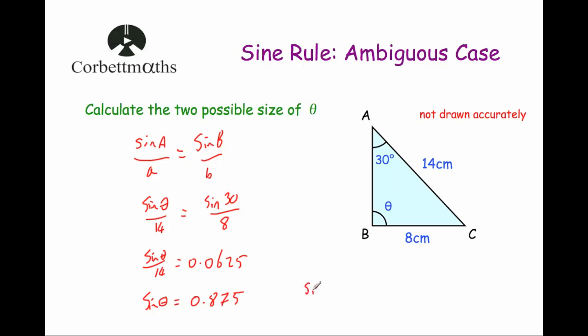So if I do the inverse sine of 0.875, I get an answer of shift sine 0.875, and it gives me a size of an angle, I'm going to do it to three decimal places, 61.045 degrees. So that's one of the possible sizes of this angle theta.